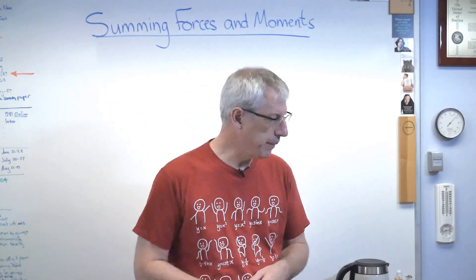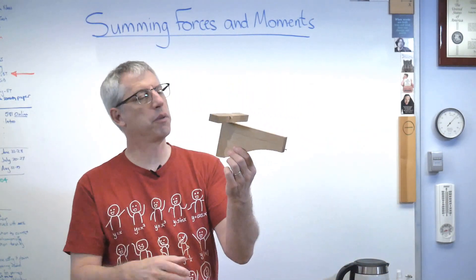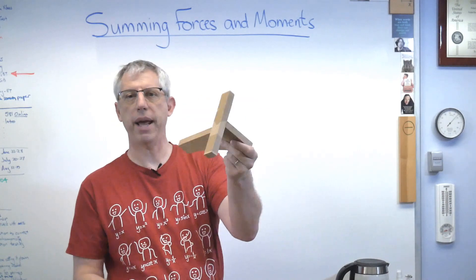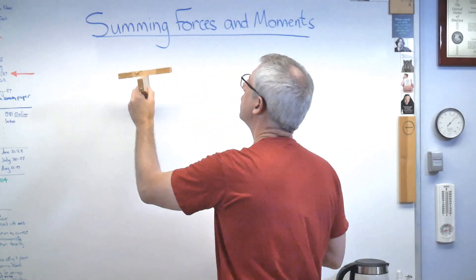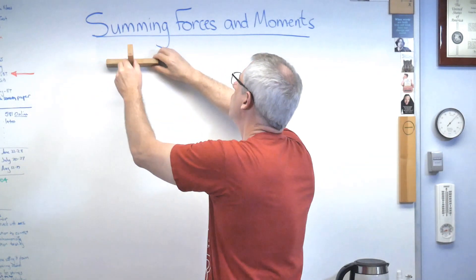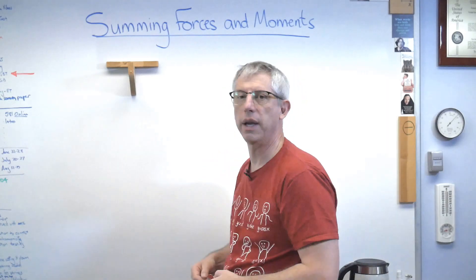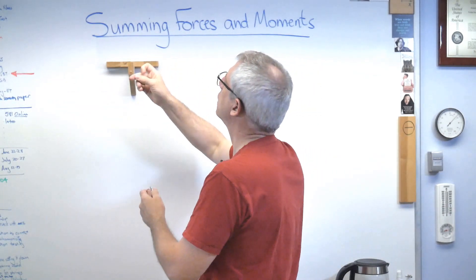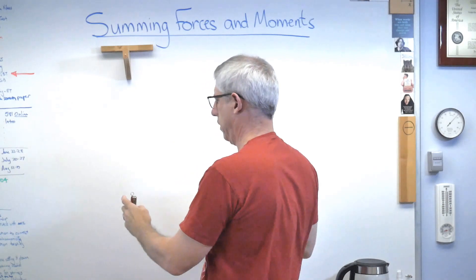First thing we need is a problem to solve — something small to put on my board. I've got this thing right here, something I made for my dynamics class. It's a little L-shaped block with magnets on it that sticks to the board, and it's got a little screw on the front so I can hang stuff off of it. It's got a whole bunch of magnets in the T-piece so it'll rotate pretty easily but won't pull off the board. I've also got my Swiss Army knife on a piece of fishing line to hang from it.